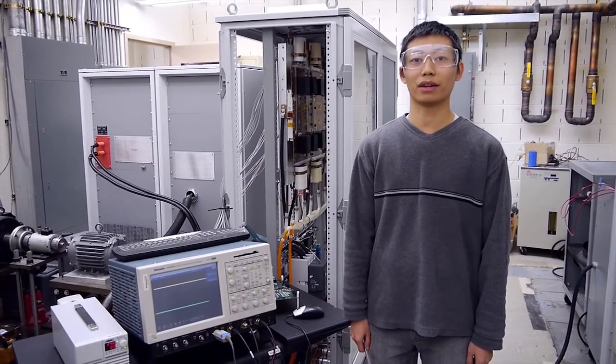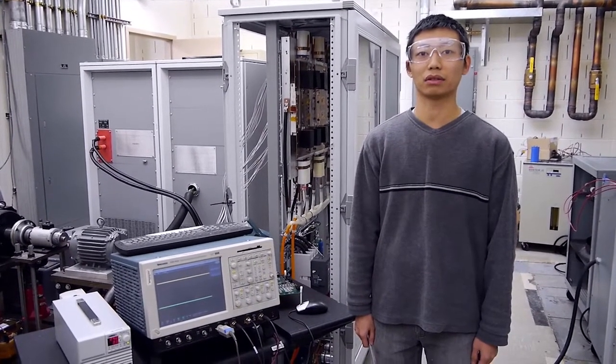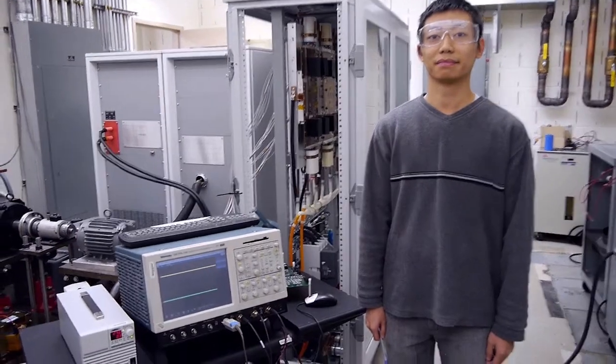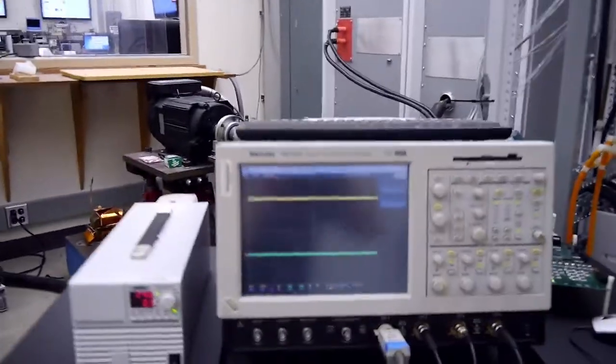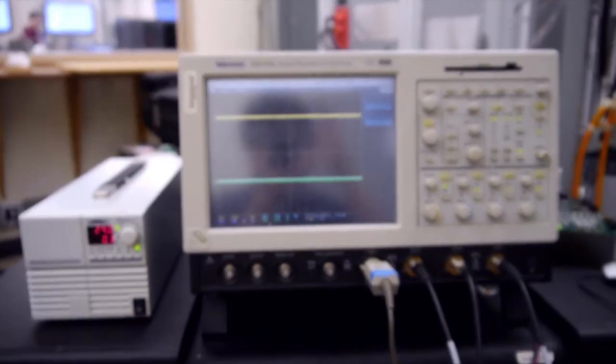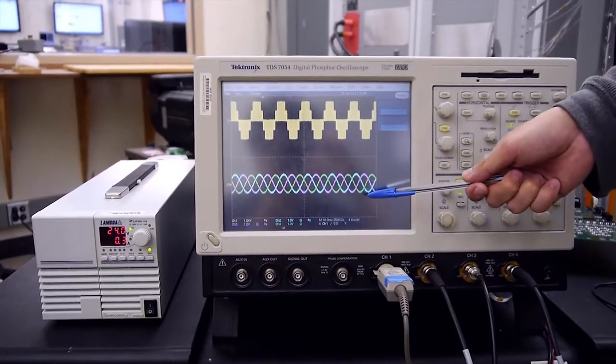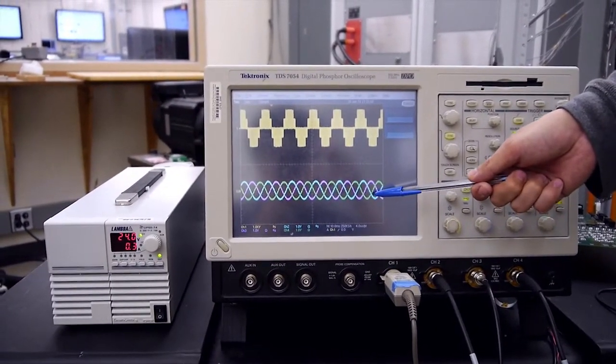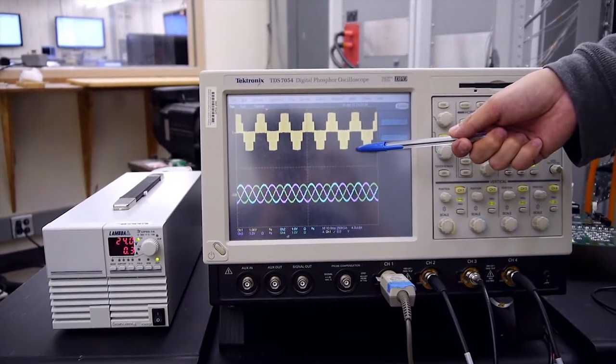Now we are going to run a 40kW power test of this 3-level 3-phase power system. Here you can see the sinusoidal waveform of the 3-phase load current, and this is the line-to-line voltage.